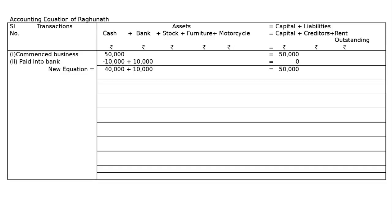Third transaction: purchased goods for cash Rs. 20,000 and credit Rs. 30,000. Total purchase of goods is Rs. 50,000. Hence Rs. 50,000 will be added to stock, and Rs. 20,000 will be deducted from cash. For the Rs. 30,000 goods purchased on credit, those from whom we purchased goods on credit are called our creditors — hence creditors will be increased by 30,000.